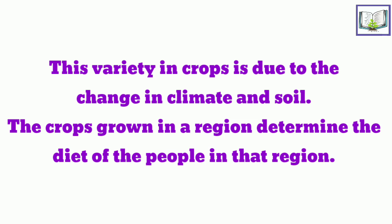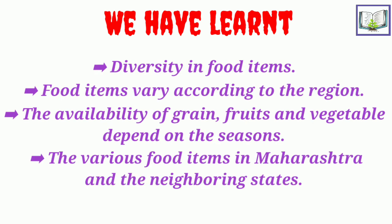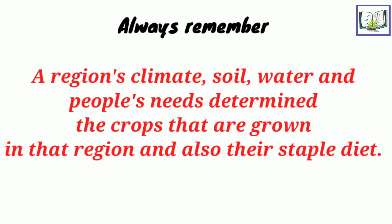Note that this variety in crops is due to changes in climate and soil. The crops grown in a region determine the diet of the people in that region. From this chapter we have learned: diversity in food items is important; food items vary according to the region; the availability of grains, fruits, and vegetables depends on the season; and there are delicious food items all over India. Always remember — a region's climate, soil, water, and people's needs determine the crops grown there and also their staple diet.